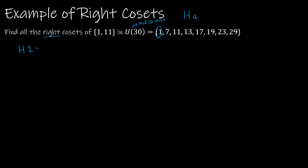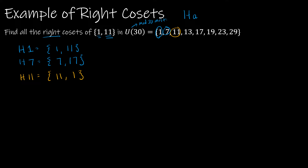H times 1: 1 times 1 is 1, 11 times 1 is 11. H times 7: 1 times 7 is 7, 11 times 7 is 77, which is 17 mod 30. Those are distinct. H times 11: 1 times 11 is 11, 11 times 11 is 121, which is 1 mod 30 — that's the same as H times 1, so not a new coset.